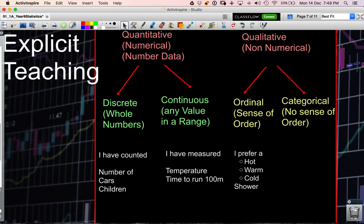The categorical data where there's no sense of order might ask a question about what is your favourite colour or what is your favourite food.